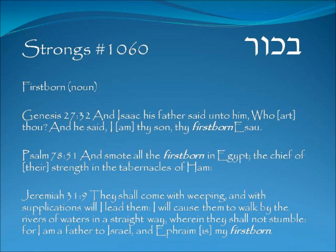Jeremiah 31:9 — 'For I am a father to Israel and Ephraim is my firstborn.' What we see here is that the firstborn rights can change from person to person. Ephraim was hardly the firstborn among those in Israel — in fact, he was not even of the twelve tribes, he was a grandson of the twelve tribes. But over the course of time, the Father has chosen Ephraim to be as the firstborn, with a certain inheritance, certain rights, and certain obligations.